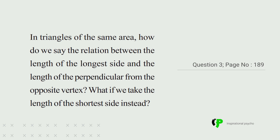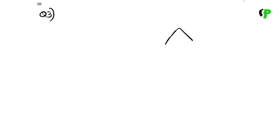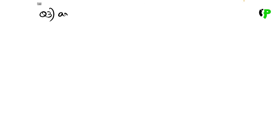Area, length, height, perpendicular, height. If we take a triangle, we will be perpendicular to the height. So, we have an equation of these three. What is the formula? Area of triangle is equal to half into base into height.